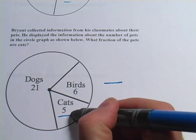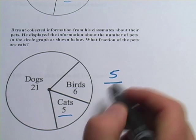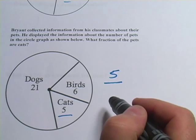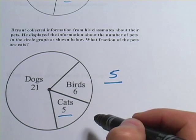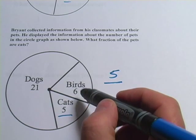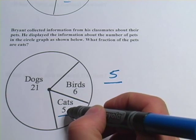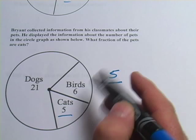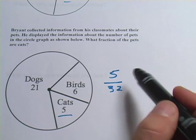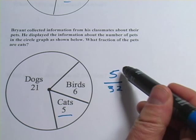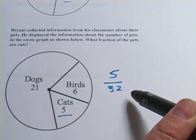The number of cats is easy — we can just read it from the graph. It's 5. For the whole pie, we have to add up all the numbers: 21 dogs plus 6 birds would be 27, plus 5 cats would be 32. So the fraction of the pets that are cats is 5/32.